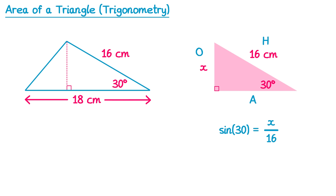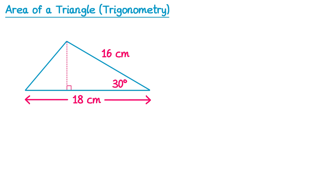We solve this by multiplying both sides by 16, giving 16 sine 30 equals x. You can use your calculator, or note that sine 30 equals one half, so x equals 16 multiplied by one half, giving x equals 8cm. So the height of this triangle is 8cm, found using trigonometry. We can now work out the area: area equals one half multiplied by 18 multiplied by 8, which gives 72cm squared.